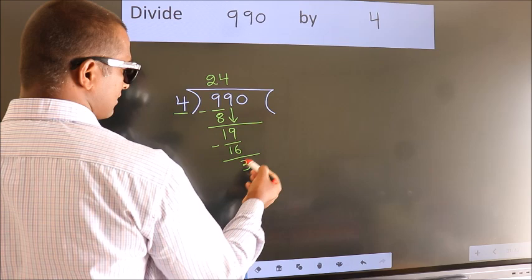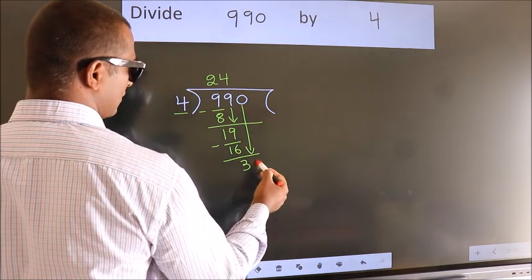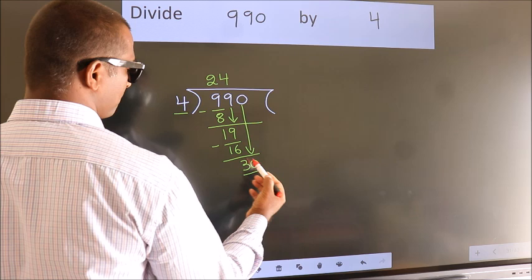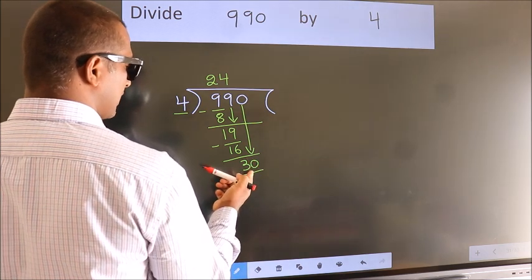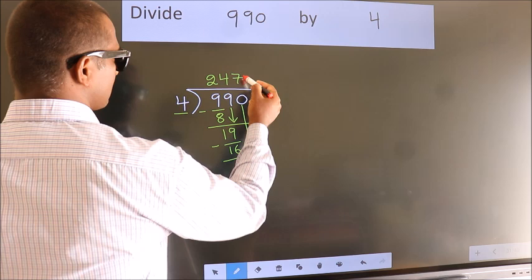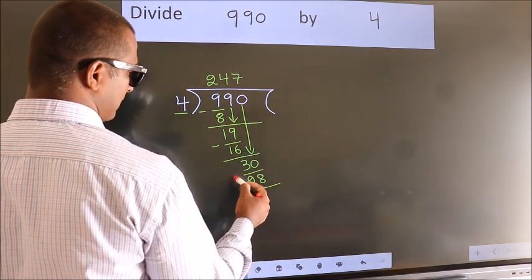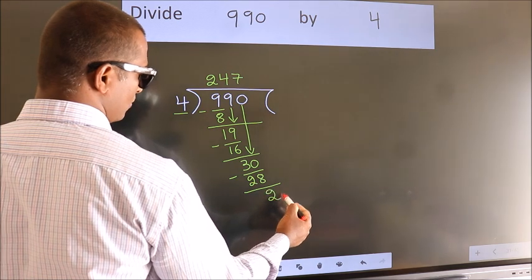After this, bring down the beside number. So 0 down. So 30. A number close to 30 in the 4 table is 4 7s 28. Now we subtract. We get 2.